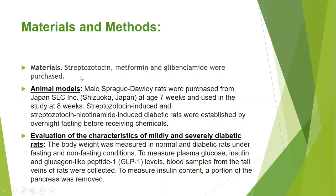The materials used are streptozotocin, metformin, and glibenclamide — the latter two are anti-diabetic drugs — and streptozotocin is the hyperglycemic chemical used to produce hyperglycemia. Animal models used are male Sprague-Dawley rats, seven weeks old. After eight weeks, we start their studies. Two groups are compared after overnight fasting.